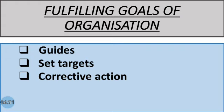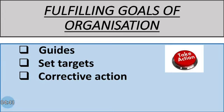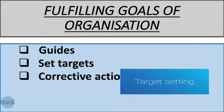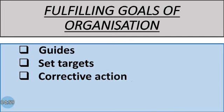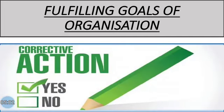The first importance is fulfilling the goals of the organization. The controlling system guides the actions of the organization at every possible stage. Every organization sets some targets and tries their best to achieve them. But if any deviations are found, corrective actions have to be taken. Thus, controlling helps in guiding organizational goals which can be achieved by performing the controlling function.